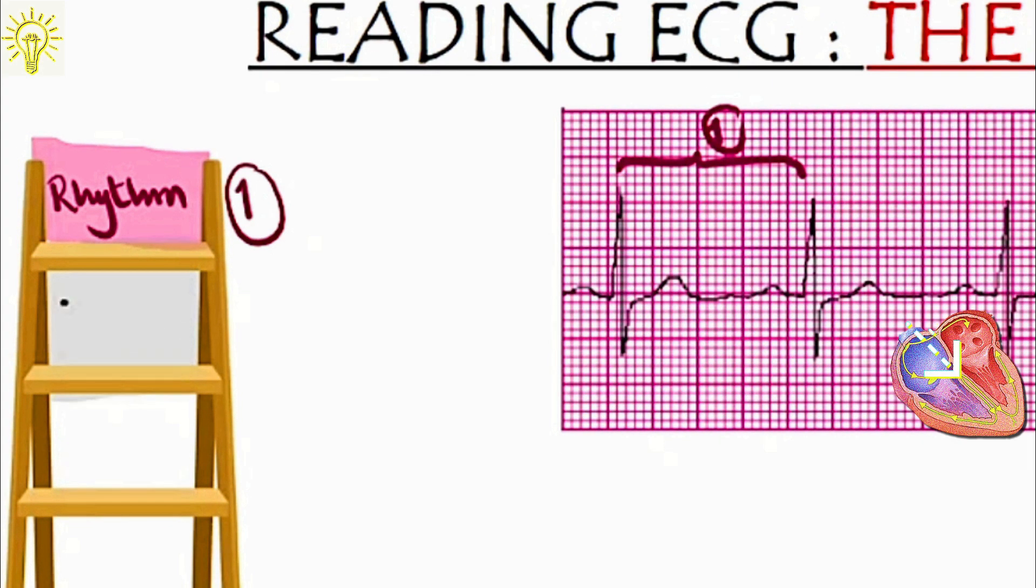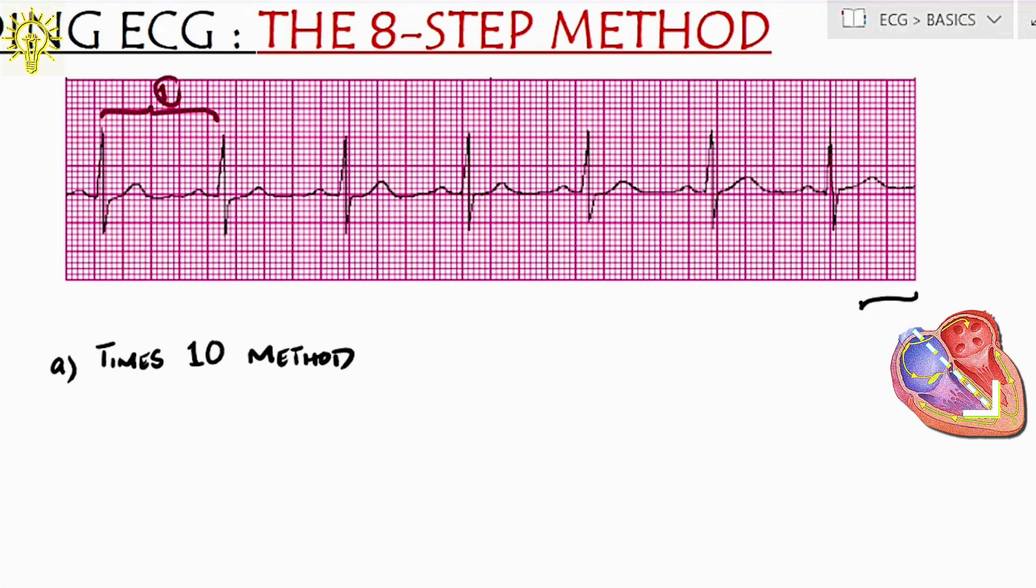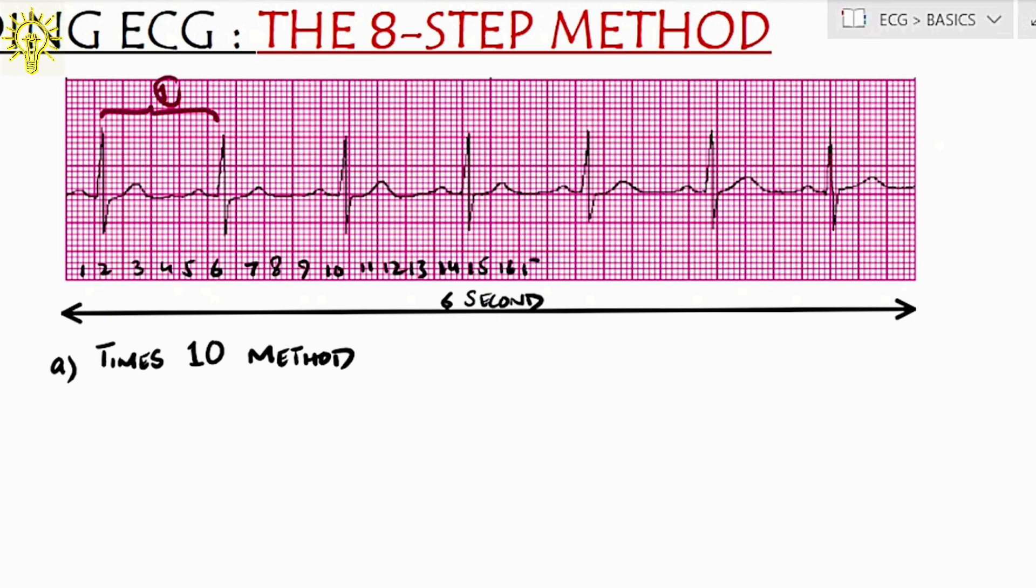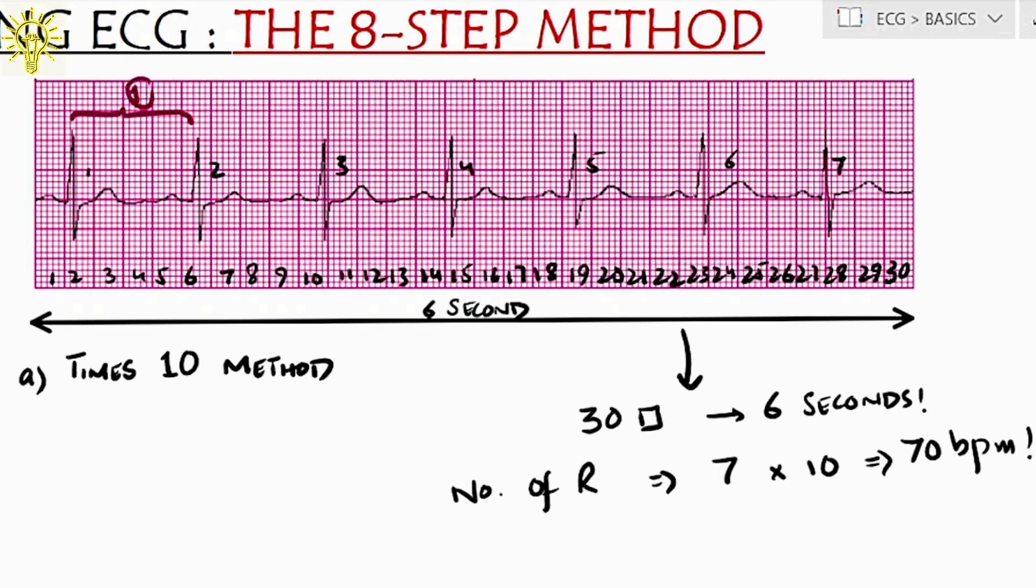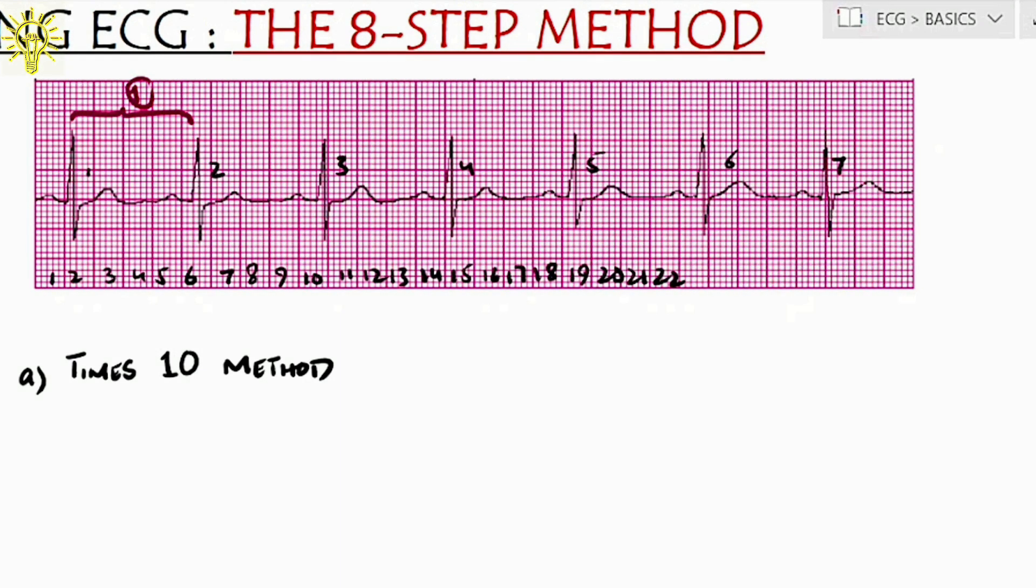Step 2: Check the heart rate. There are many ways. I'll show you two methods here. Number 1: Times 10 method. Remember in episode 2, we showed how 5 large boxes make 1 second? Let's take a 6 second strip, meaning 30 large boxes. For ease, I'm labeling from 1 to 10 to 15 to 20 to 25 to 30 large boxes making us 6 seconds on strip. Now, note number of R waves in this 6 second strip. 1, 2, 3, 4, 5, 6 and 7. 7 times 10 equals 70 beats per minute. So, it is called times 10 method. This method is mostly used for irregular rhythms.